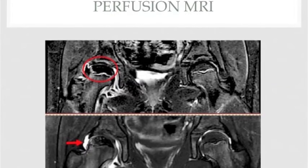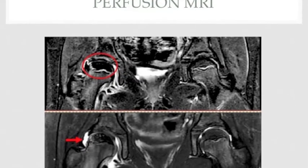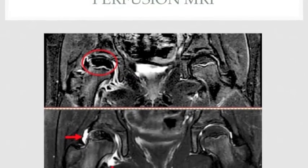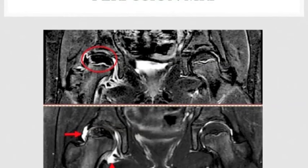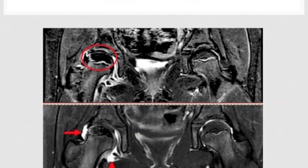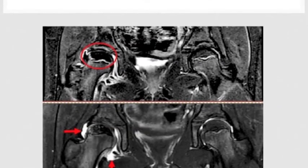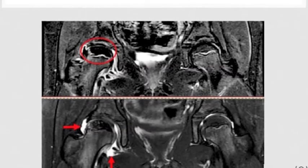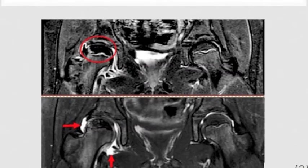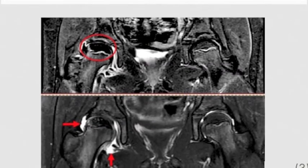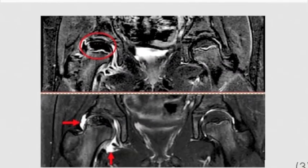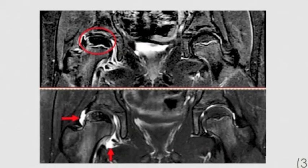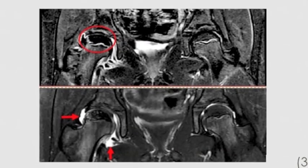These images show an example of a perfusion MRI for a child with Perthes disease. In the top image, the affected femoral head on the left side appears dark — where you see the circle — indicating areas of no blood flow. In the bottom image, the brighter white areas around the femoral head, where you see the arrows, indicate inflammation of the hip joint. The opposite hip joint appears normal with blood flow and no inflammation.